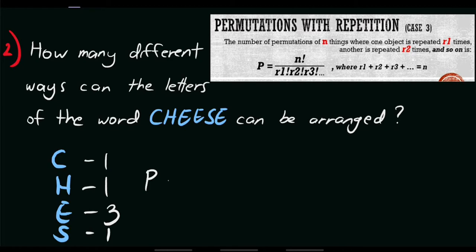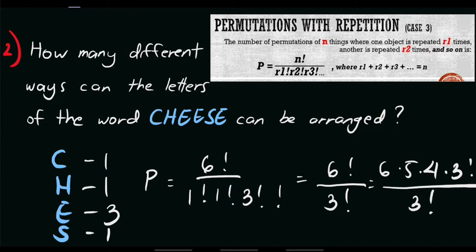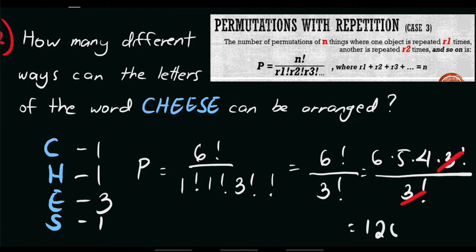The formula gives P = 6 factorial over 1 factorial times 1 factorial times 3 factorial times 1 factorial. The denominator simplifies to just 3 factorial. So we have 6 factorial over 3 factorial, which equals 6 × 5 × 4 × 3 factorial over 3 factorial. Canceling the 3 factorials, we get 6 × 5 × 4 = 120. So there are 120 ways to arrange the letters.